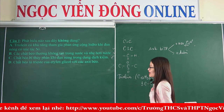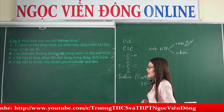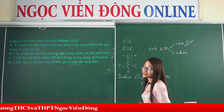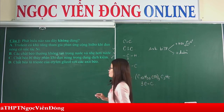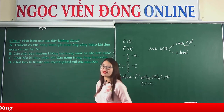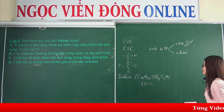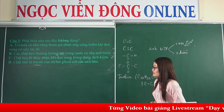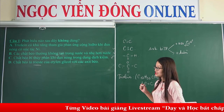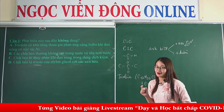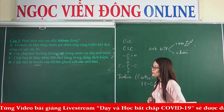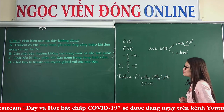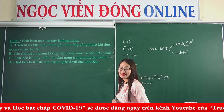Bây giờ chúng ta qua đáp án D: chất béo là este của ethylene glycol với acid béo. Ở đây là không chính xác. Đã là este 3 chức có nghĩa nó là este 3 chức, mà ethylene glycol là ancol 2 chức. Vậy đây là phát biểu không chính xác. Nếu muốn chính xác thì phải sửa lại là este của glycerol với các acid béo. Vậy đối với câu hỏi số 1 chúng ta sẽ chọn đáp án D.